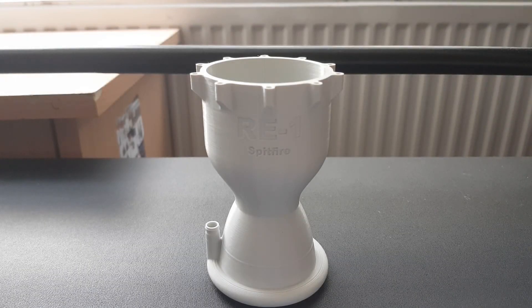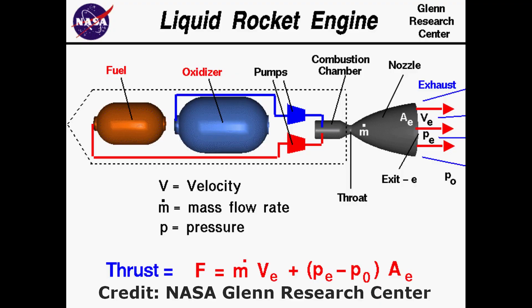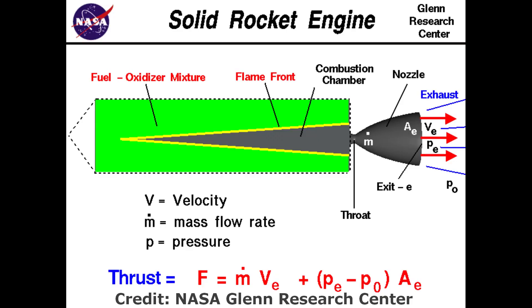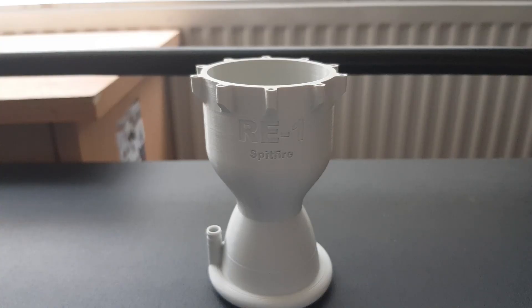The first thing I had to do was integrate variables into the program, such as the throat area, throat diameter, exit area, exit diameter, combustion temperature, flow rate, combustion pressure, exit pressure, and the ratio of specific heats. And also, let's not forget about the molar mass of the exhaust, which usually, if you've got different gases in the exhaust, it's the average of those gases.